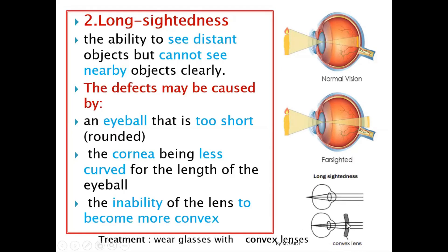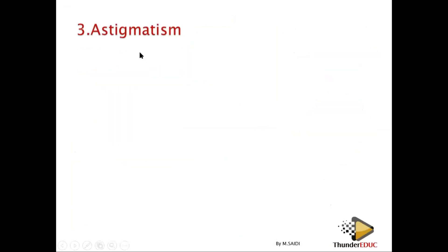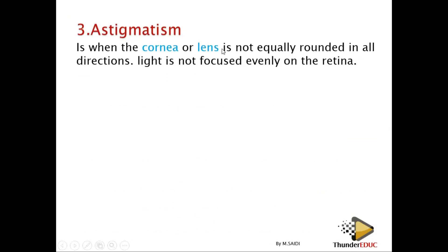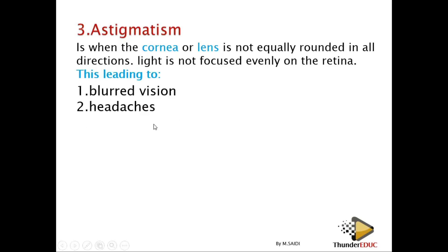We treat long-sightedness by wearing convex lenses. Convex lenses converge the light, so by the time it reaches the eye's lens it has already been converged. The third defect is astigmatism. Astigmatism occurs when the cornea or the lens is not equally round in all directions, so light is not focused evenly on the retina, and you will be seeing multiple images.